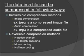The data in a file can be compressed in following ways. There are two ways: first one is irreversible compression methods, which includes irreversible compression method means once it is compressed it cannot be obtained back, like JPEG.